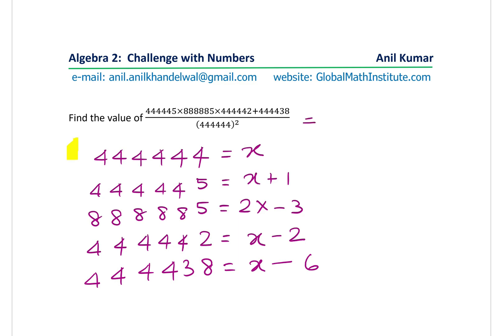So we could write this as, the first number here on the top numerator is x plus one. The next one is 2x minus 3, and then we have x minus 2. And then we have plus x minus 6, and the denominator is x squared. So this expression can be written in the form of x, and now, the idea is to simplify this expression. I think you can now pick up the problem from here, solve it further, and get the solution, and then check with my solution.